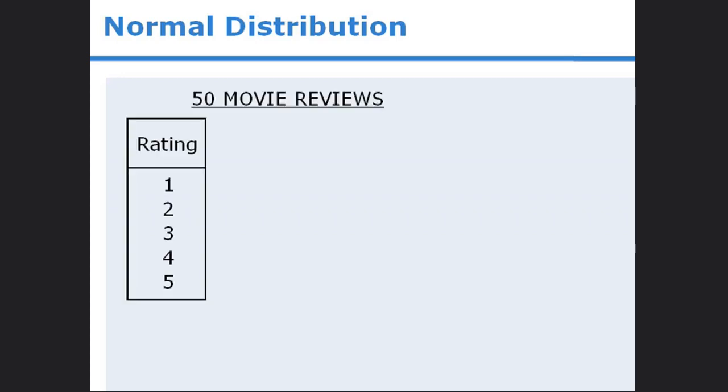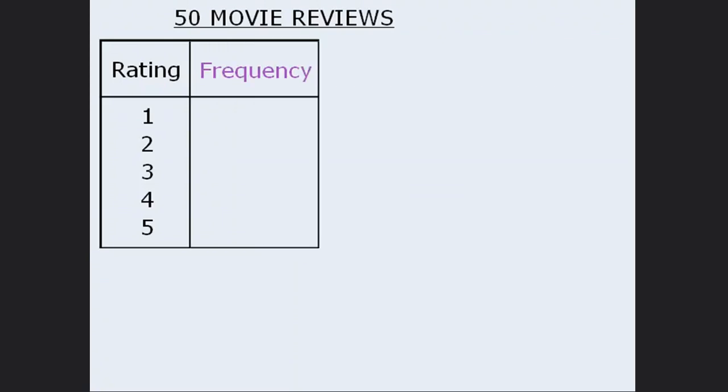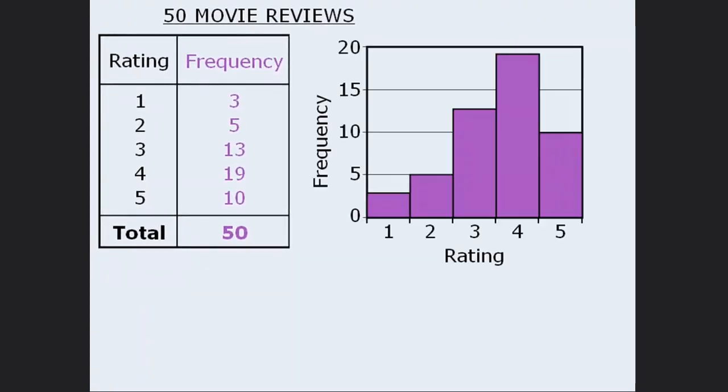To set this up, consider the following example. Let's say that 50 people rated a certain movie on a scale from 1 to 5. If we keep track of the number of votes that each rating gets, we might get an outcome where 3 people give the movie a rating of 1, 5 people give it a 2, and so on. Although this frequency table provides the results of the survey, we might better understand the data if it were presented in the form of a bar chart. This chart is called a histogram, and it provides a convenient visual depiction of the distribution of data.